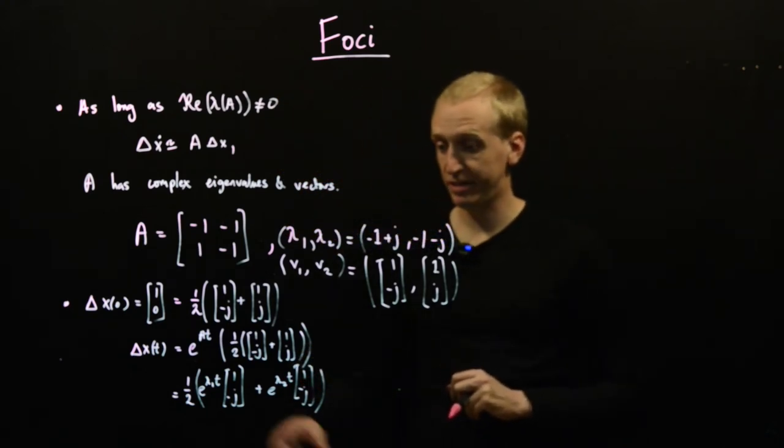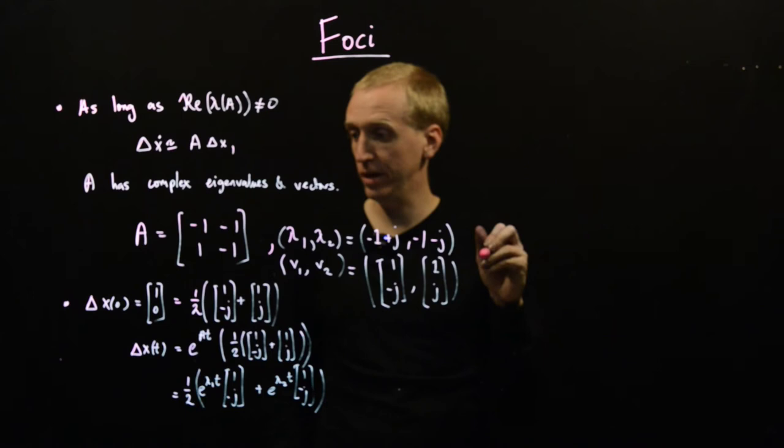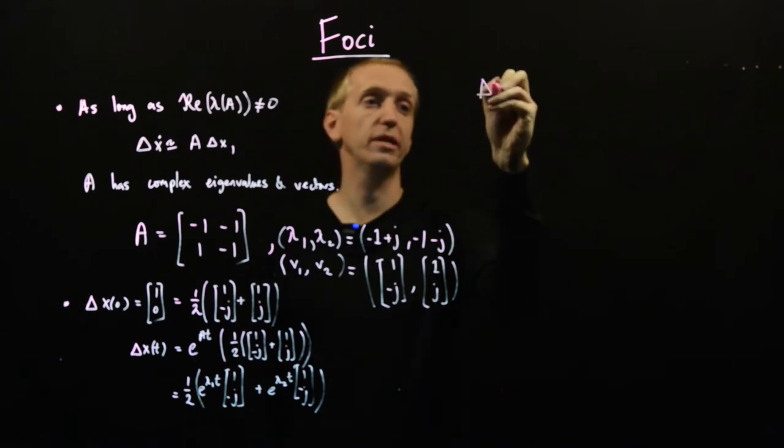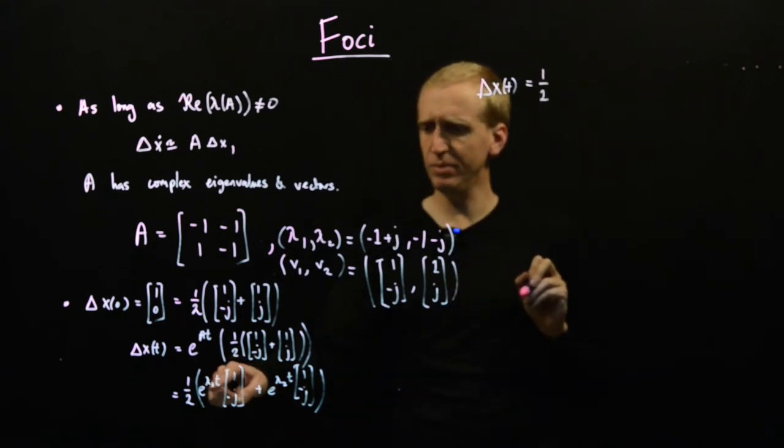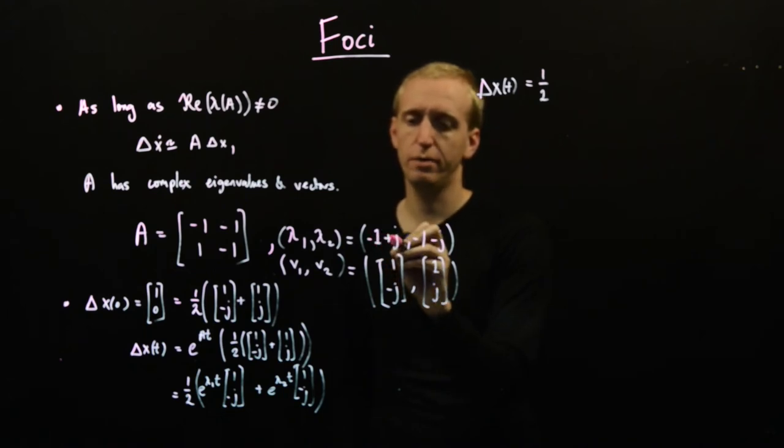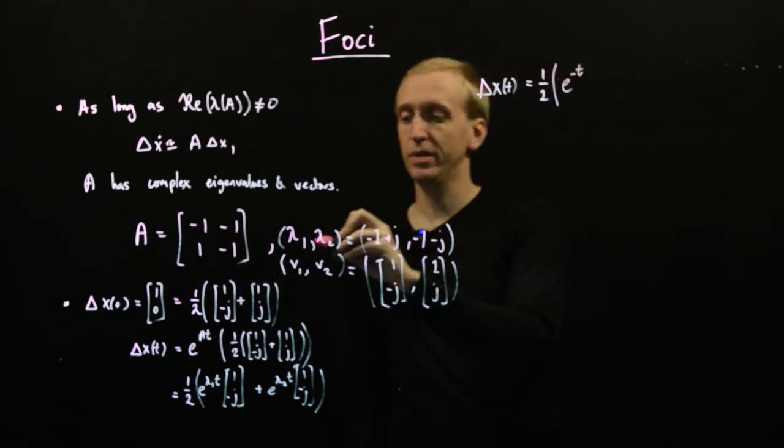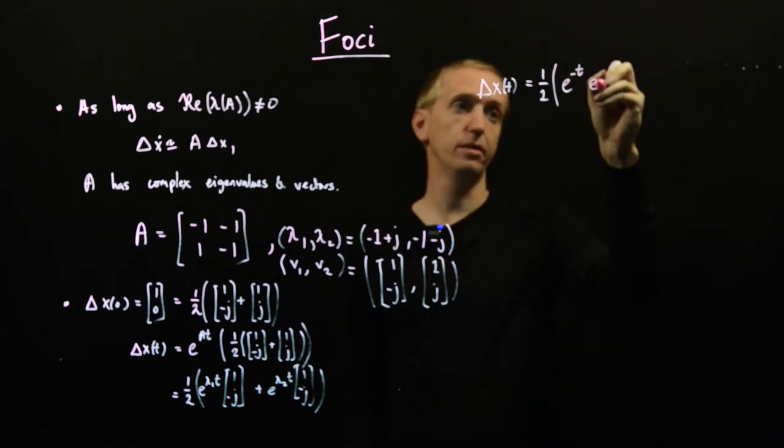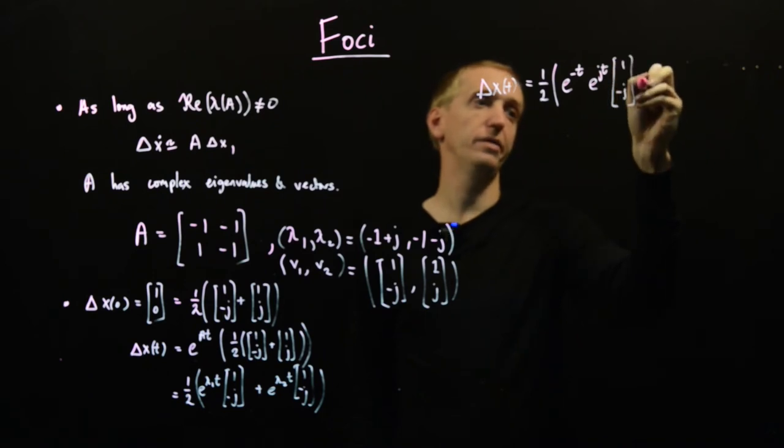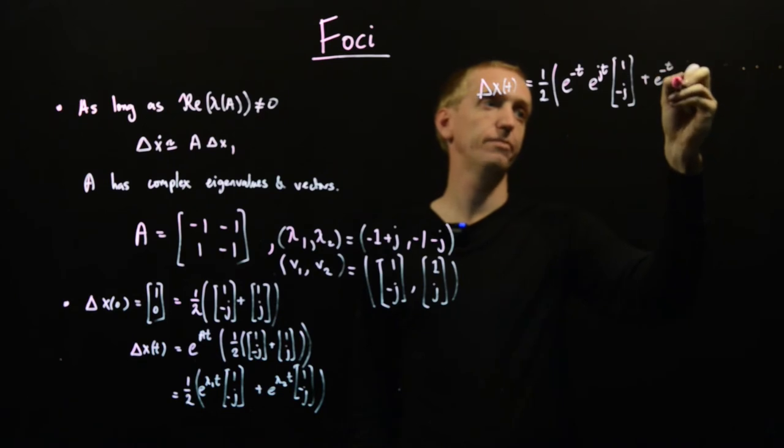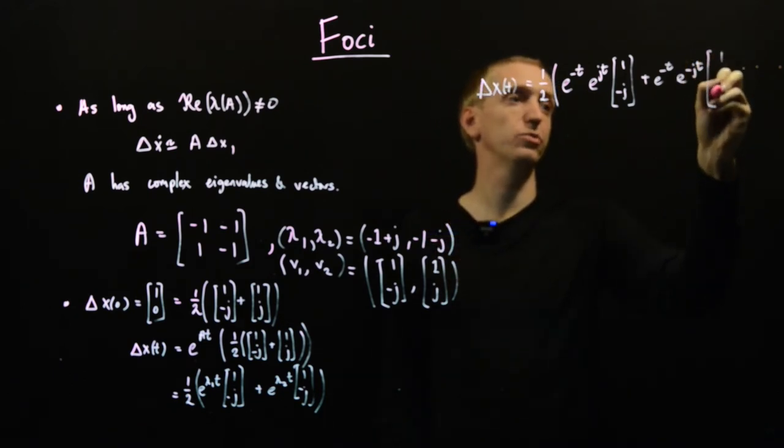Let's get to town and try and simplify this thing a bit. If we just keep persevering with the algebra, we get delta x(t) is equal to 1/2 [e^(λ₁t)(1, -j) + e^(λ₂t)(1, j)]. That's e^(-t)e^(jt)(1, -j) + e^(-t)e^(-jt)(1, j).